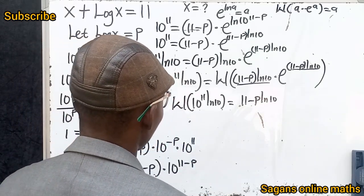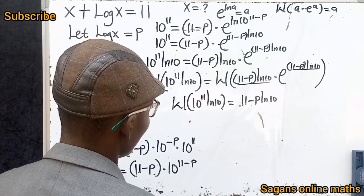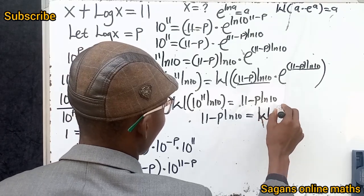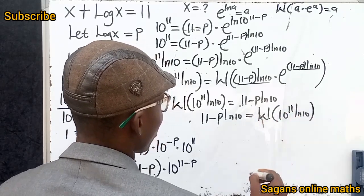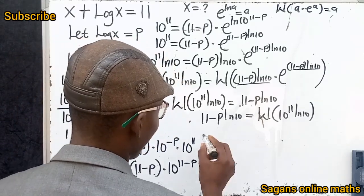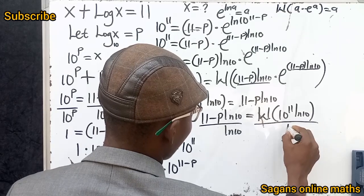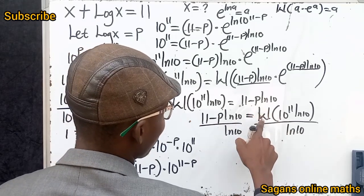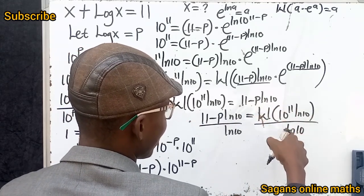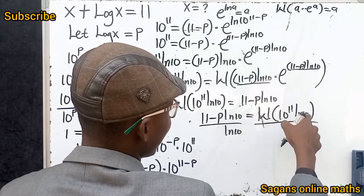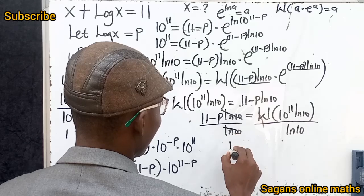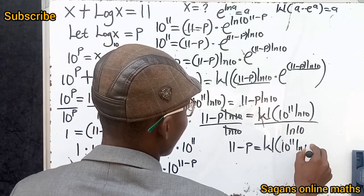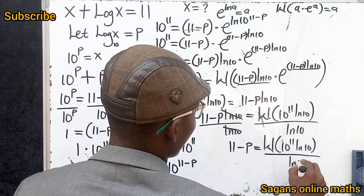Now we have 11 - p = W(10^11 · ln10) / ln10. Dividing both sides by ln10 — note that the Lambert W function is affecting the entire argument 10^11 · ln10 before dividing, so do not cancel ln10 prematurely. So 11 - p = W(10^11 · ln10) / ln10.